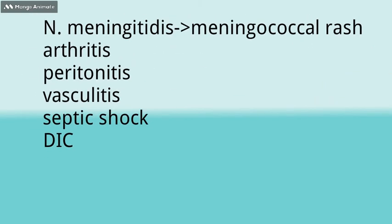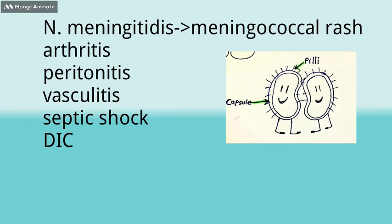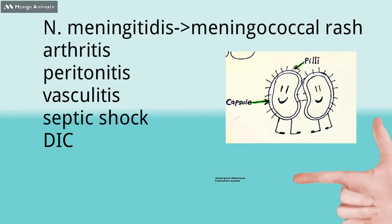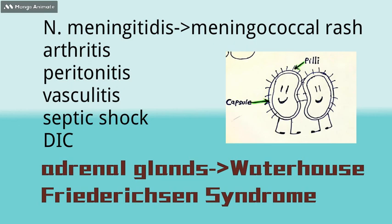Coming back to Neisseria meningitidis, it gives rise to a petechial rash. This meningococcal rash is a significant feature. Also, arthritis, pericarditis, vasculitis, septic shock, and disseminated intravascular coagulation are the other manifestations of meningococcemia. Infection by meningitidis causes hemorrhages in the adrenal gland, resulting in Waterhouse-Friderichsen syndrome.